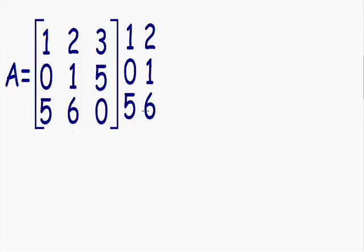Now by copying these two columns, notice how I'm able to create three diagonals. I have one diagonal right here, another diagonal right here, and another diagonal right here. What we need to do is multiply the numbers in all three diagonals. So that's what I'm going to do right now.